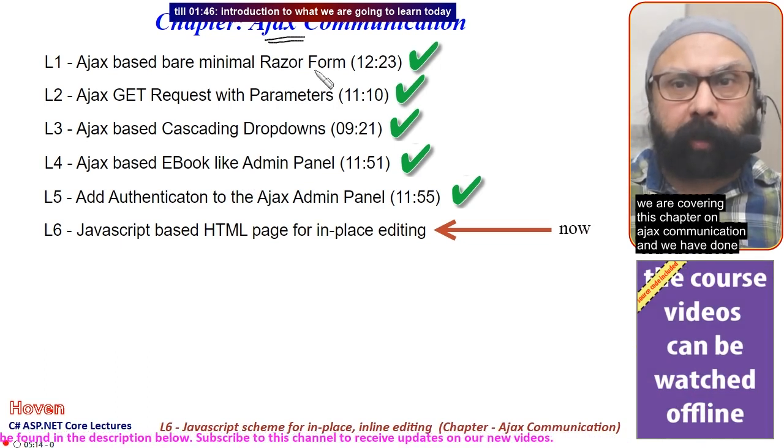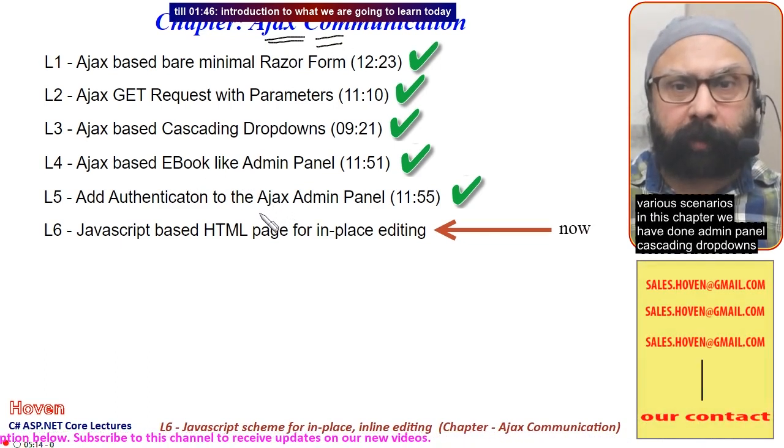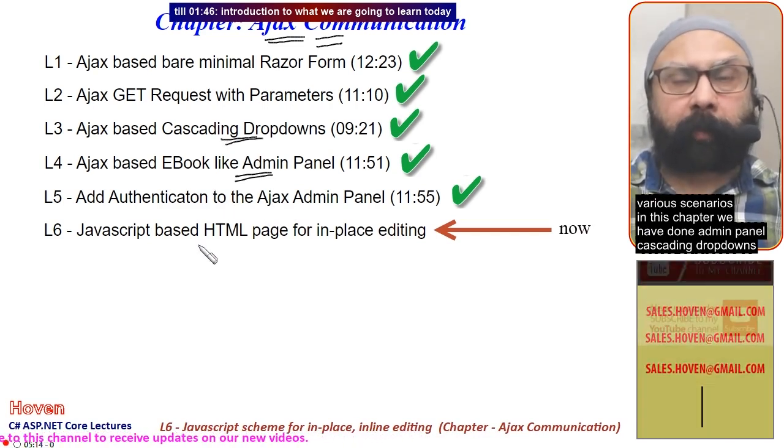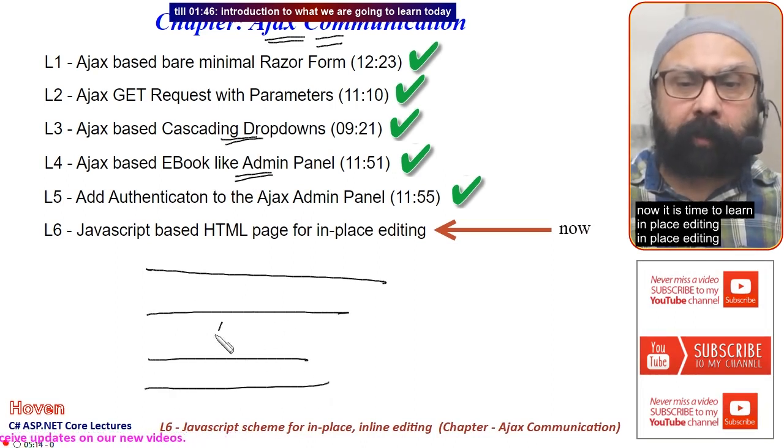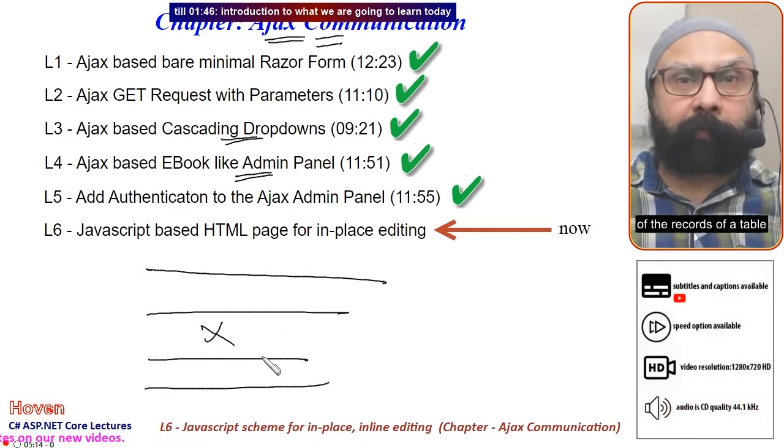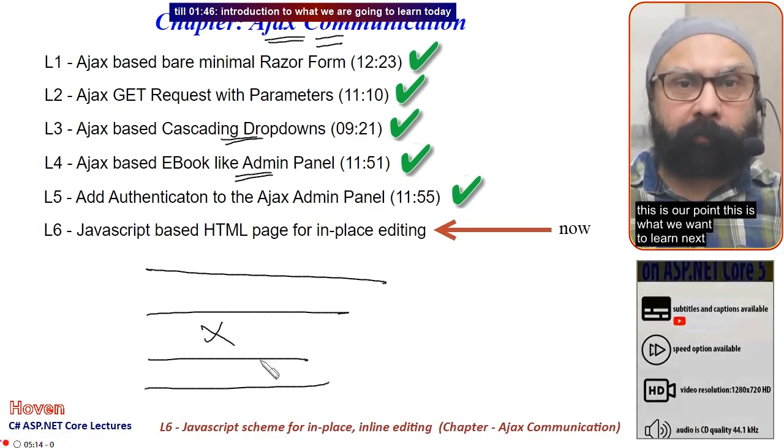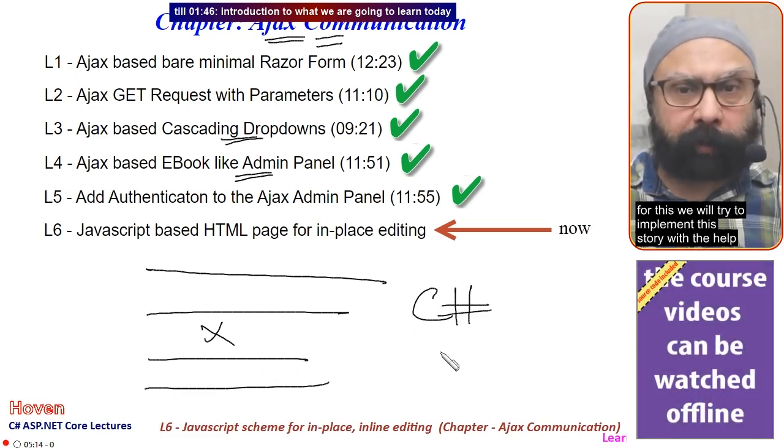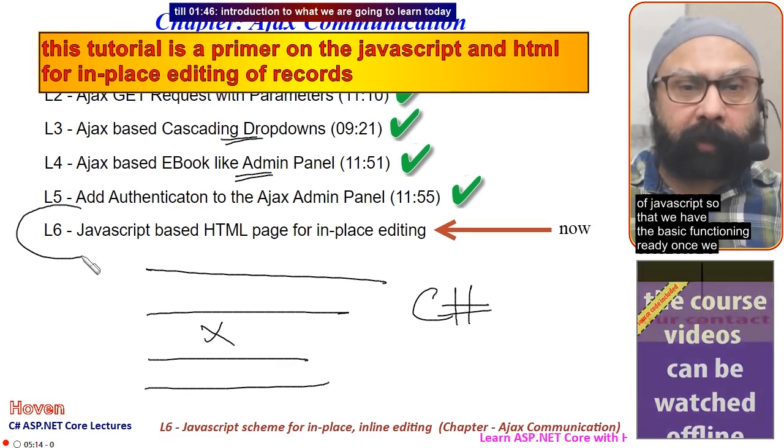We are covering this chapter on Ajax communication. We have done various scenarios including admin panel cascading dropdowns. Now it is time to learn in-place editing of table records. Before we use C# ASP.NET Core for this, we will implement it with JavaScript so we have the basic functioning ready.